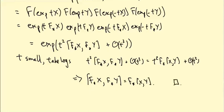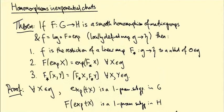This completes the proof. We have a linear map f★ which is a Lie algebra homomorphism satisfying F(exp(X)) = exp(f★(X)) for all X in g. This reduces the study of smooth homomorphisms of matrix groups to homomorphisms of Lie algebras, which are much simpler, and this is what we'll use for the rest of the course to study representations of matrix groups.